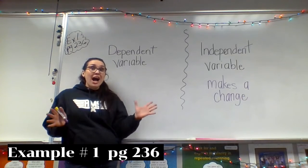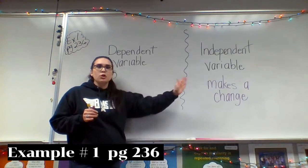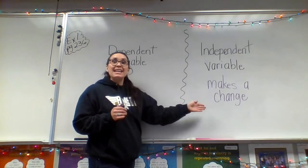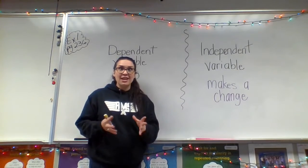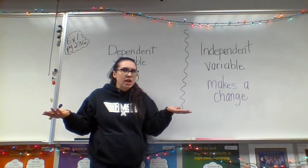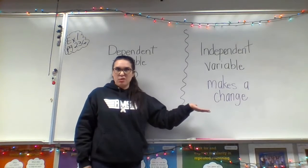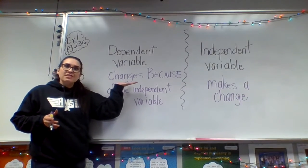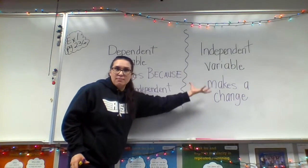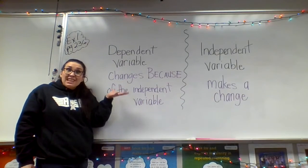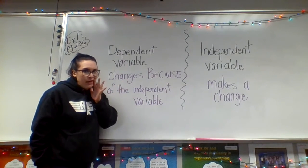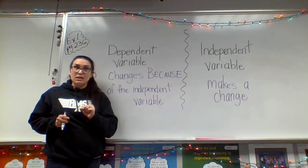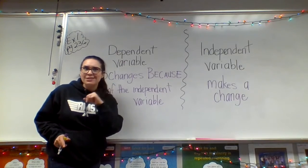On page 236, example number one has great definitions for this. The independent variable makes a change — it makes a change because it wants to, it does its own thing. The dependent variable, on the other hand, changes because the independent variable made a change. The dependent variable really relies on, or is dependent on, whatever the independent variable is doing. Review example number one for those definitions.